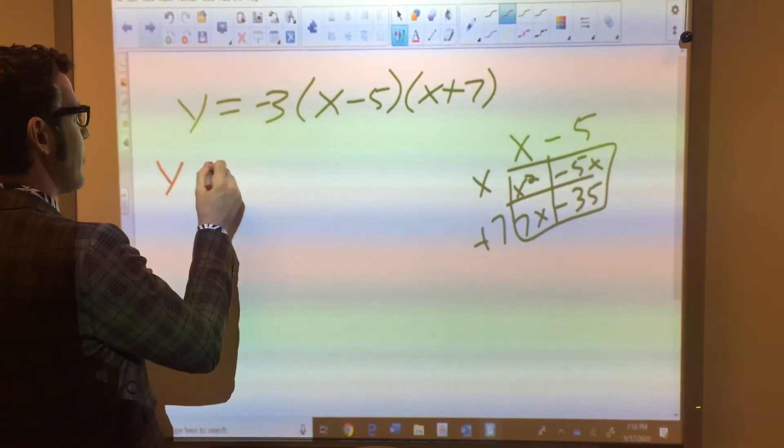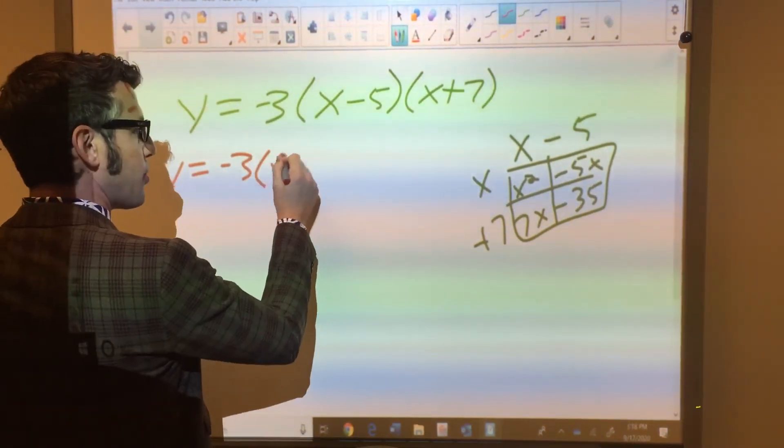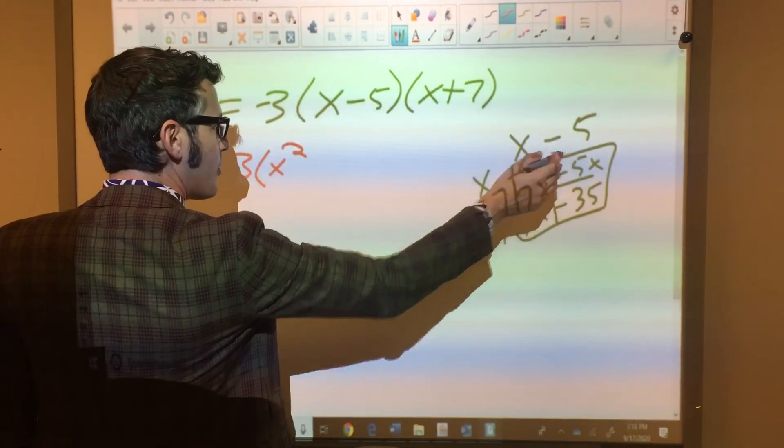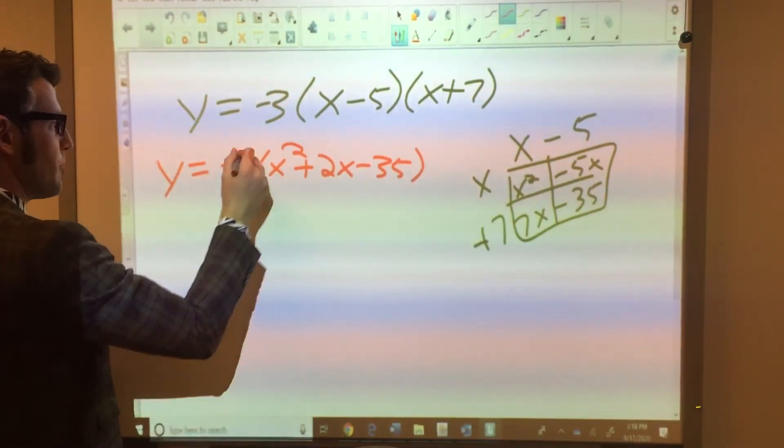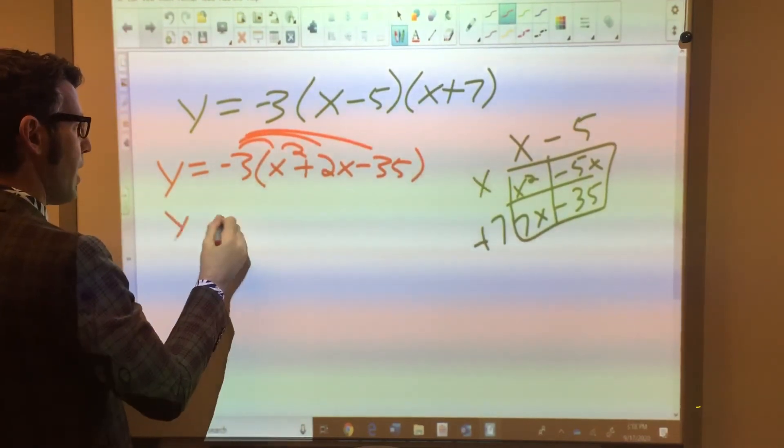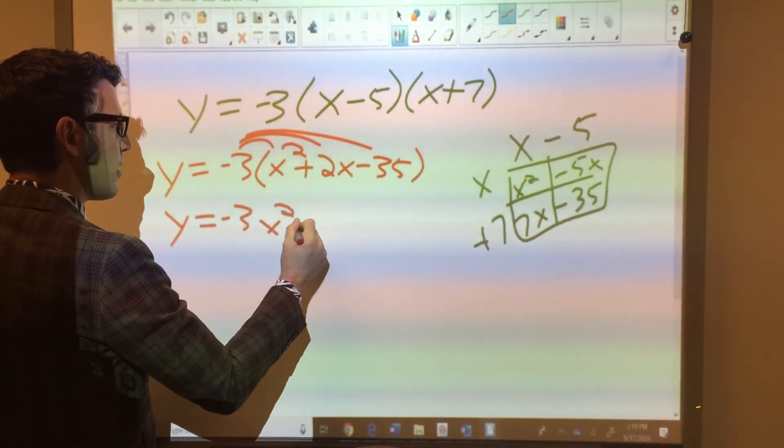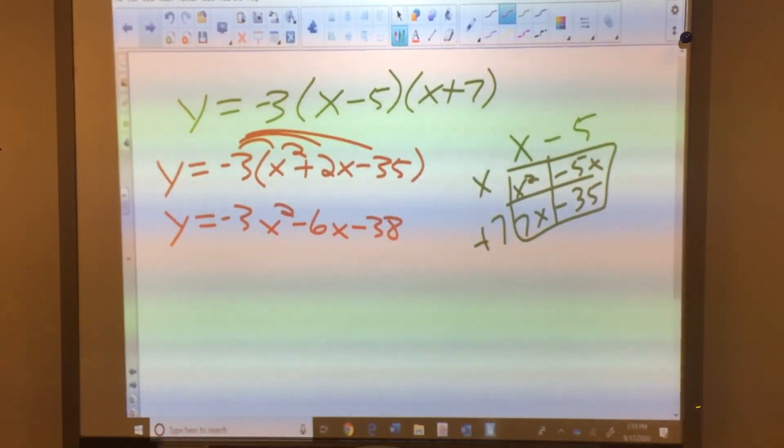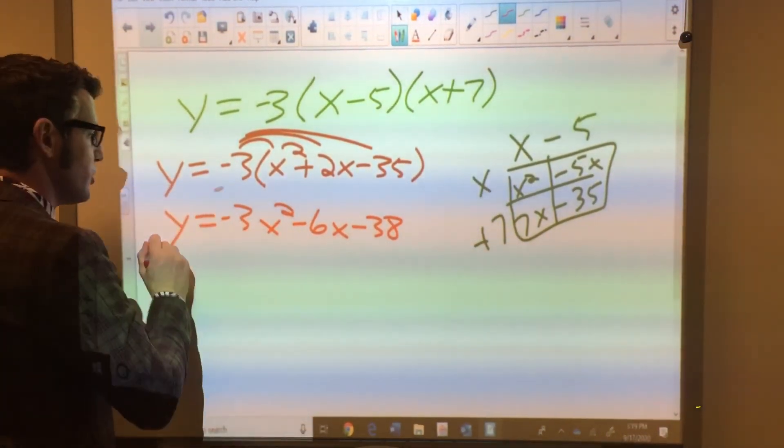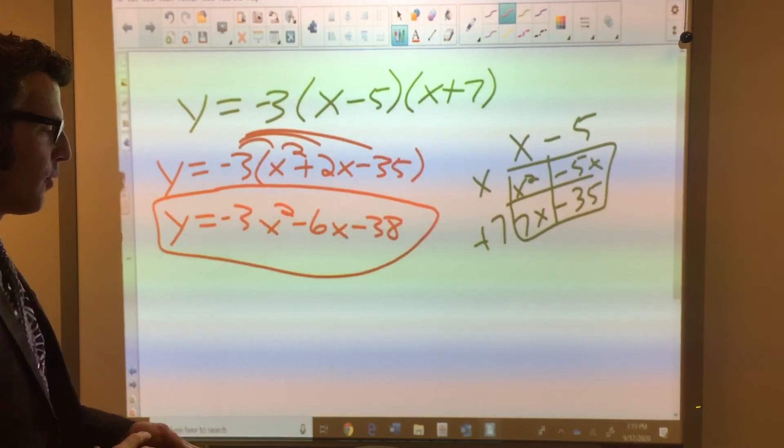So, we now have y equals -3, and that's going to be in the parentheses x² + 2x - 35. I distribute this to everything here, so that's y equals -3x² - 6x - 38. And that is your standard form for that intercept.